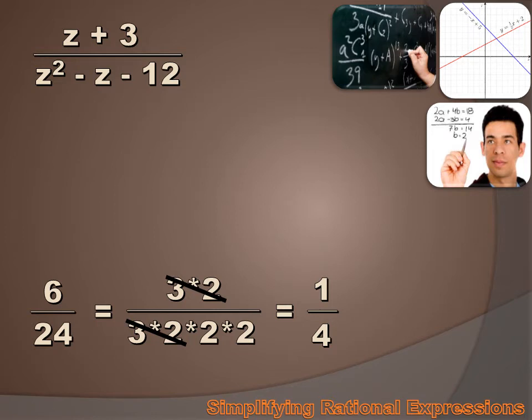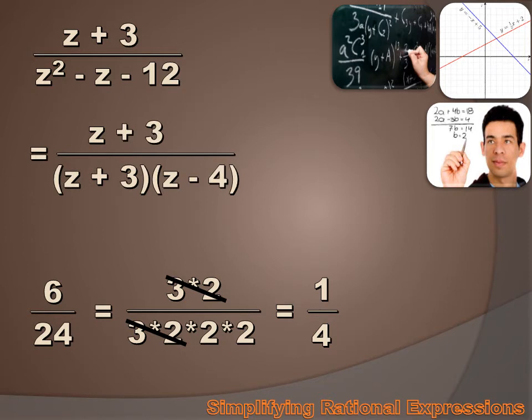Same is true if they're algebraic expressions. In this case, we factor the denominator, and we get z plus 3 times z minus 4 as our denominator. Well we've got a z plus 3 in our numerator, so we can eliminate those and simplify this expression to 1 over z minus 4.